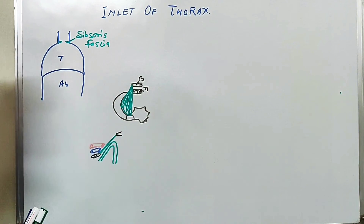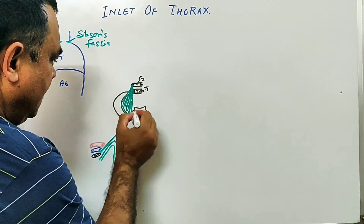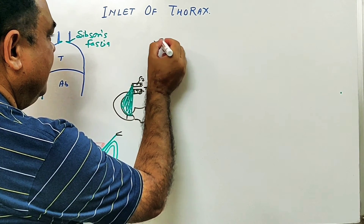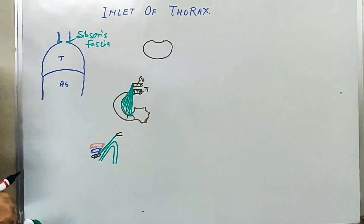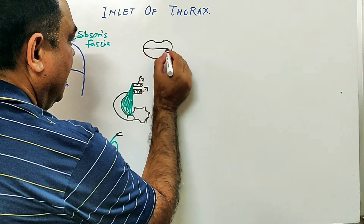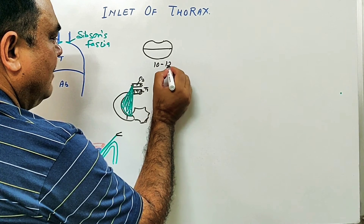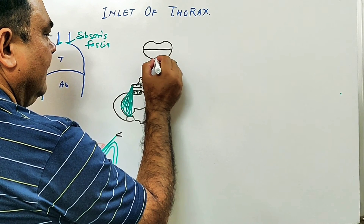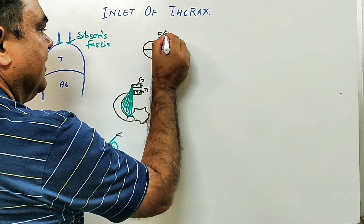If you see the shape of this inlet, it is shaped somewhat like this. The horizontal dimension is about 10 to 12.5 centimetres, and the anteroposterior dimension is about 5 centimetres.